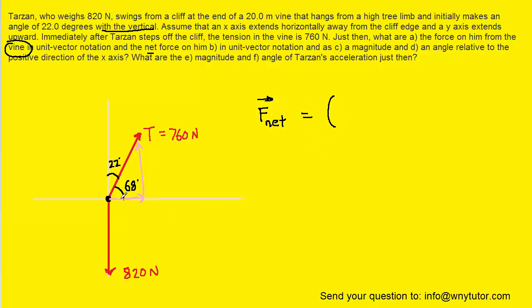Now for the net force we are going to have to include the x forces, the total x forces as well as the total y forces. Now we can see the only force acting in the x direction was that x component of tension. So we are going to still have the 760 times the cosine of 68 degrees, and that will be i hat.